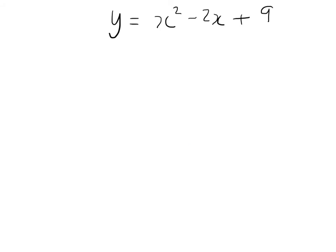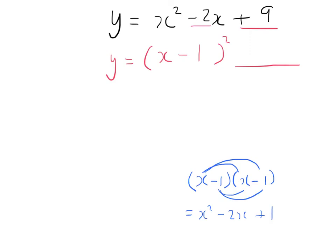Let's run through one more example without drawing the curve. For x squared minus 2x plus 9: we use the bracket x minus 1, since half of minus 2 is minus 1. Expanding x minus 1 squared gives x squared minus 2x plus 1 — that's correct for x squared and minus 2x, but we need plus 9, so we add another 8, giving x minus 1 all squared plus 8.